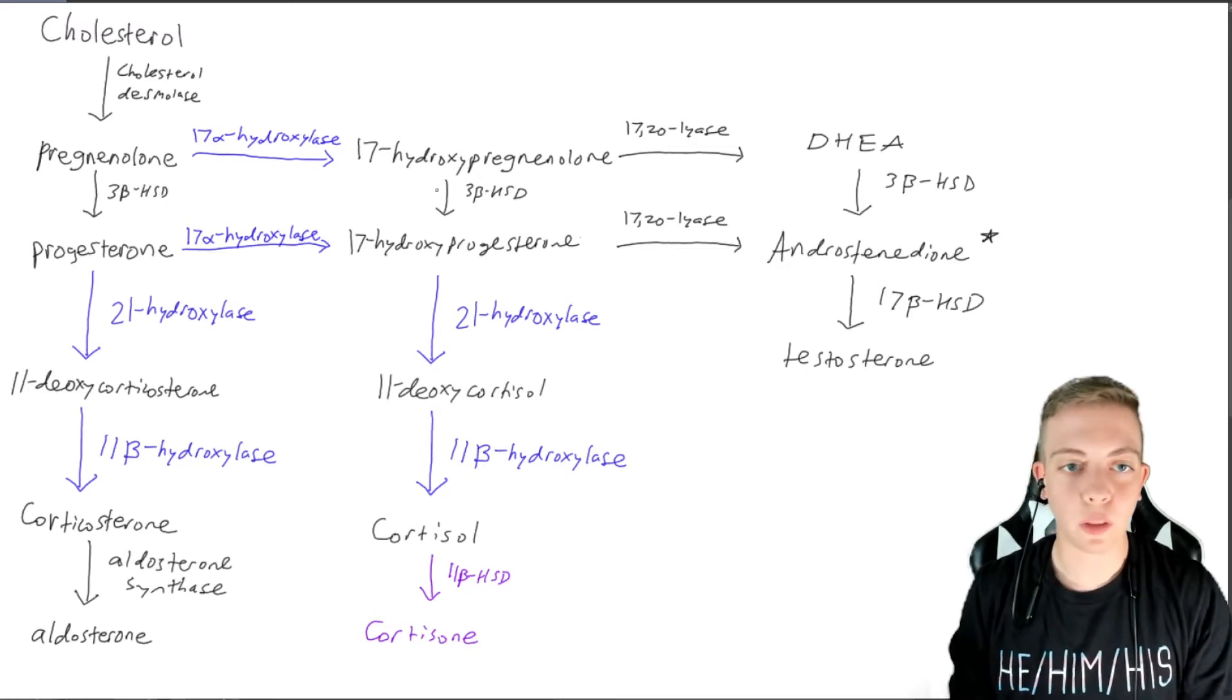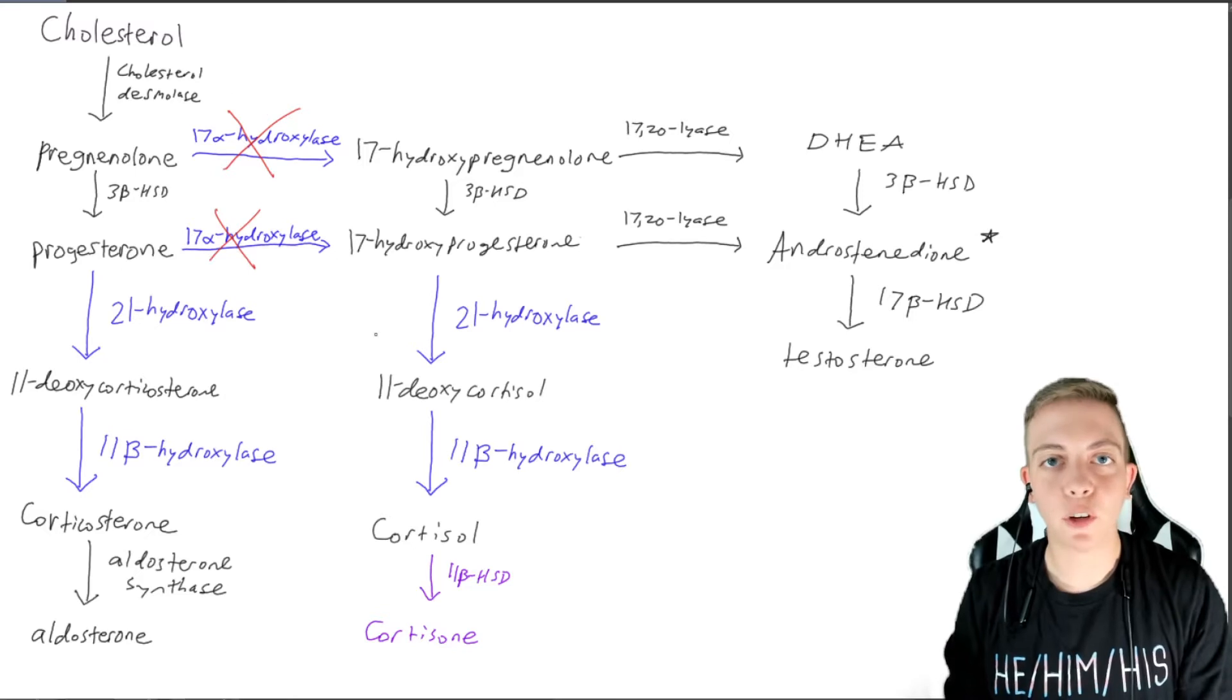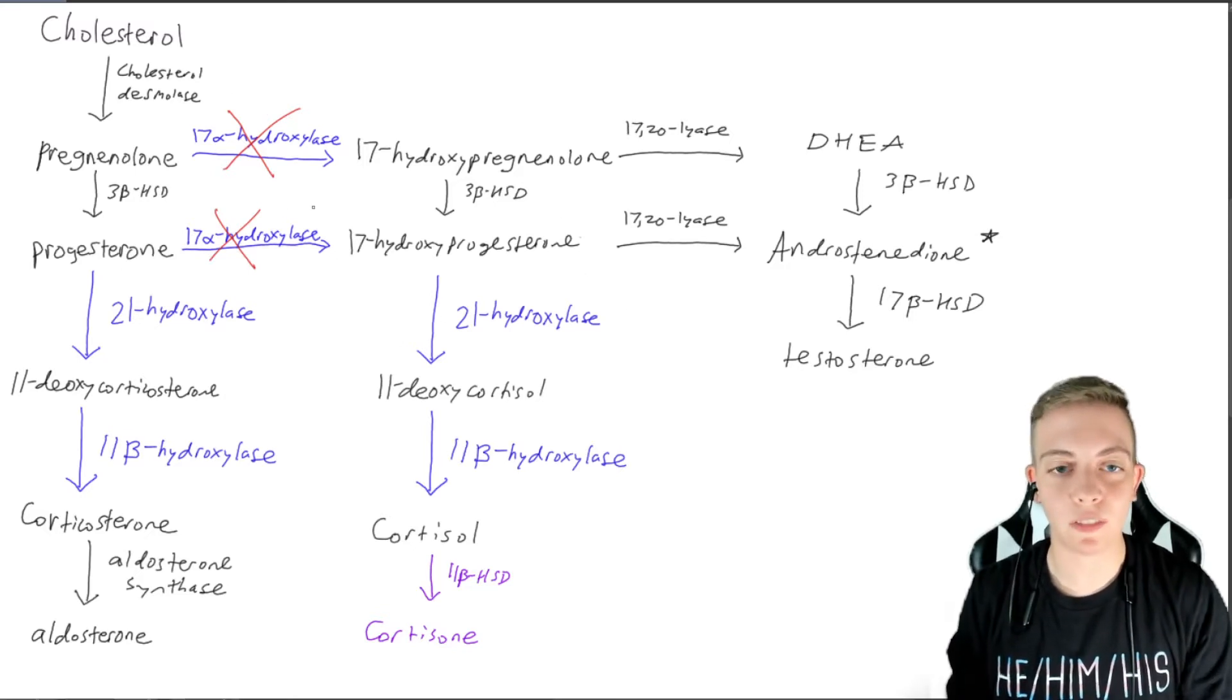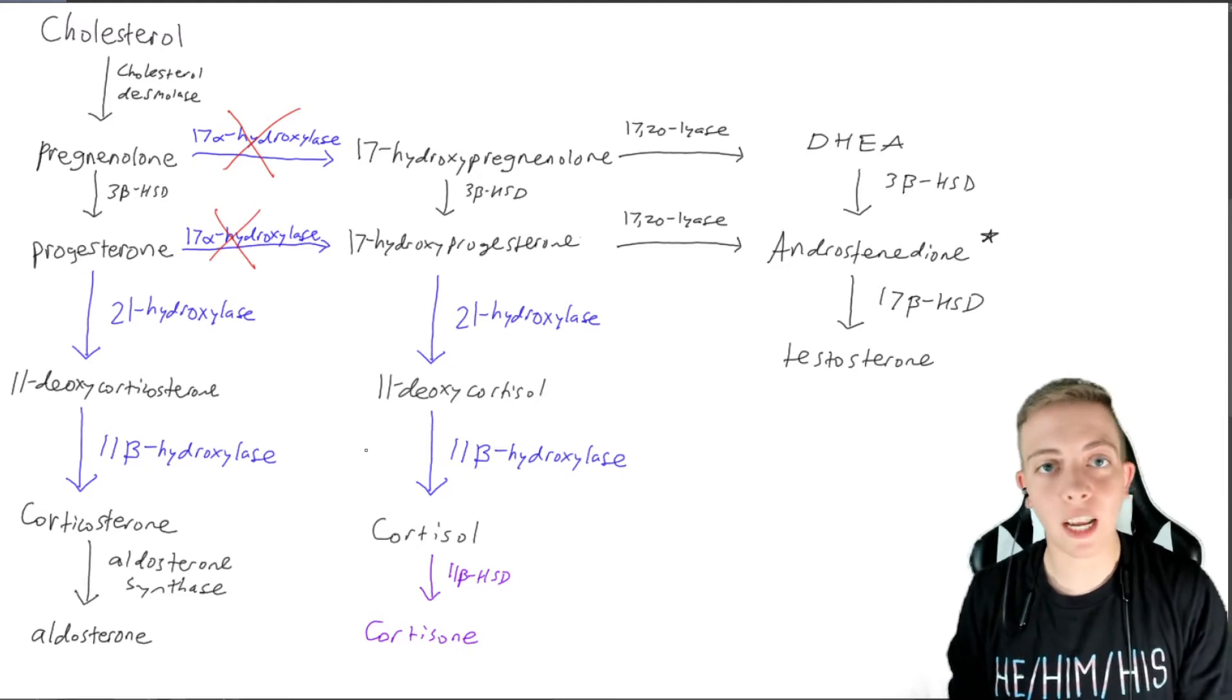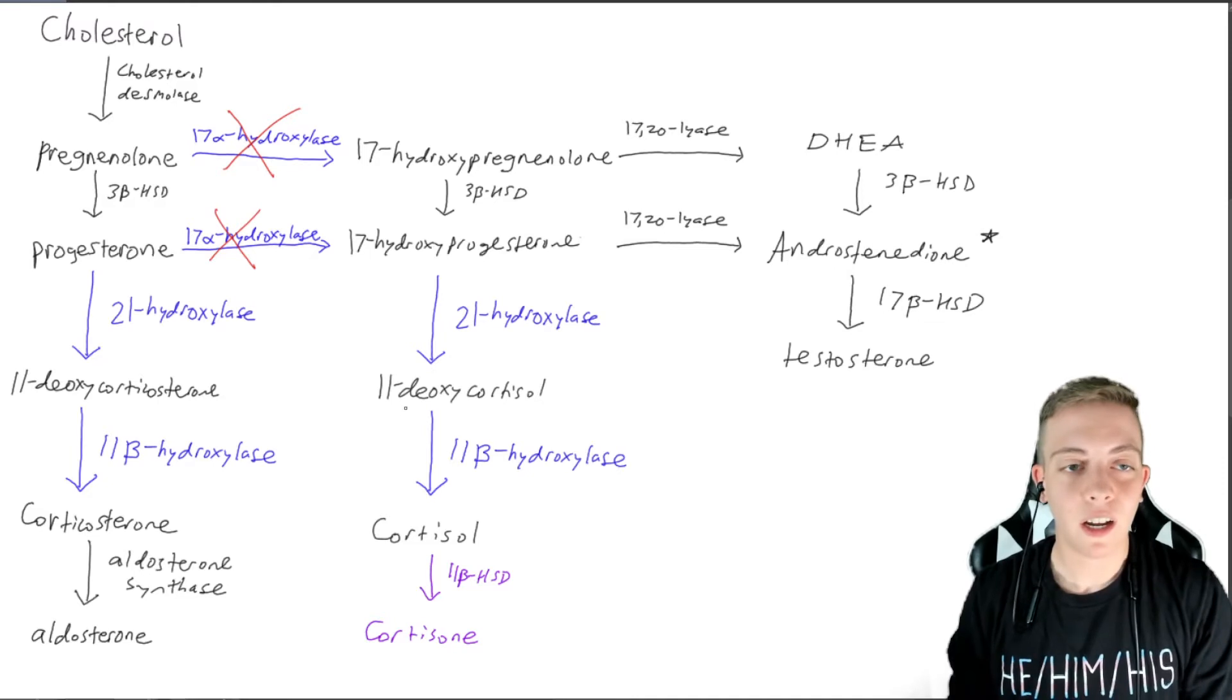So looking at our pathway here, we're going to take out 17 alpha hydroxylase. And once again, if you feel comfortable in knowing where this is going to end up, feel free to pause the video, see what you think the answer is, and then push play to see what my answer is.